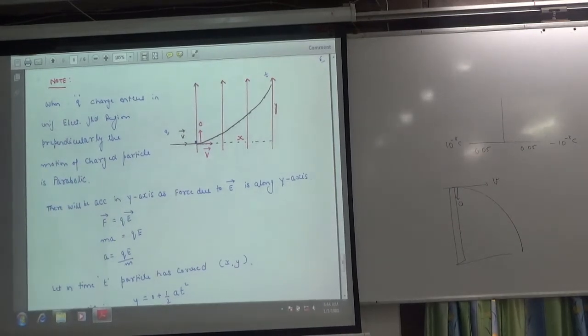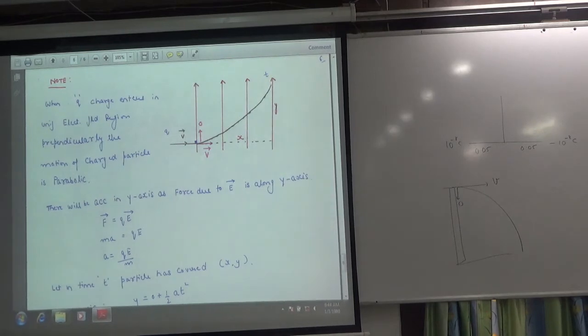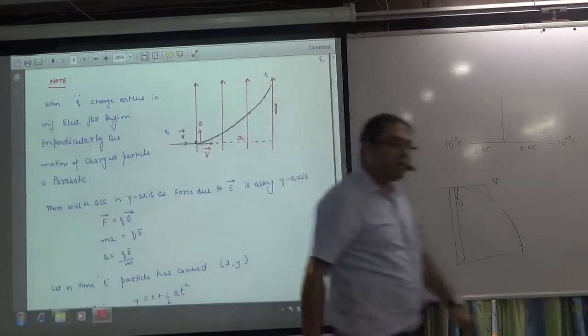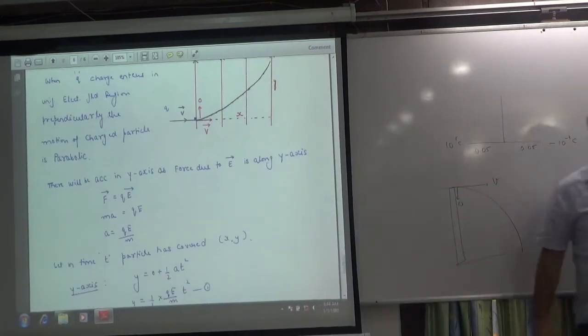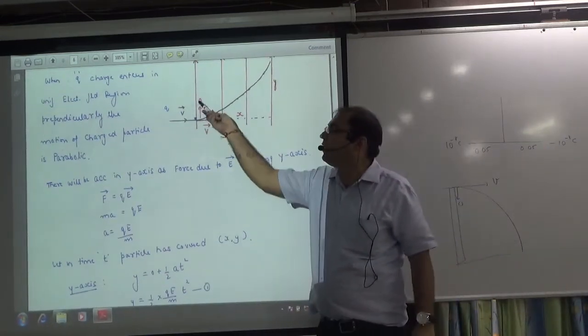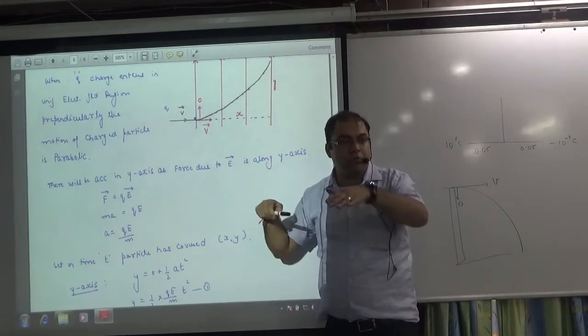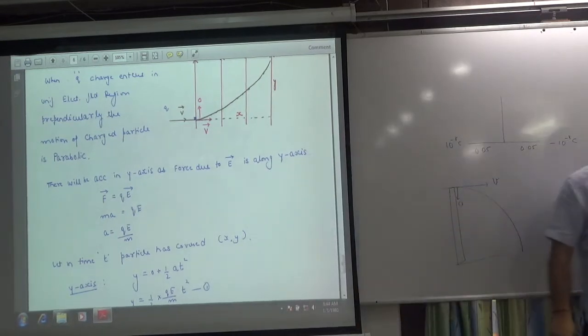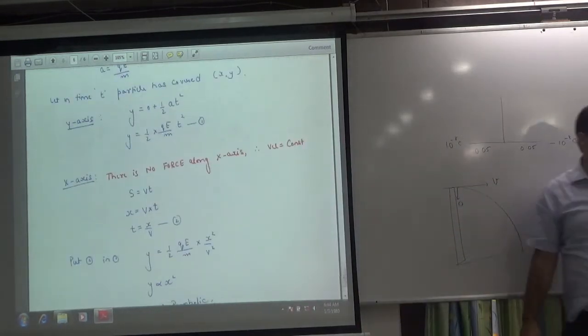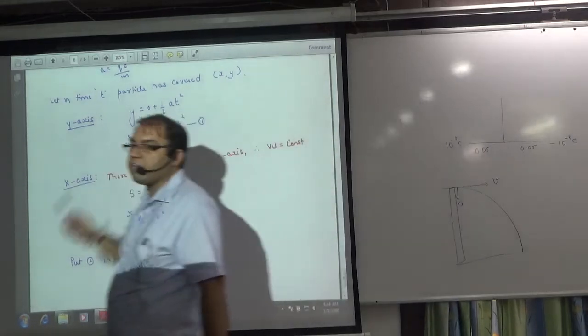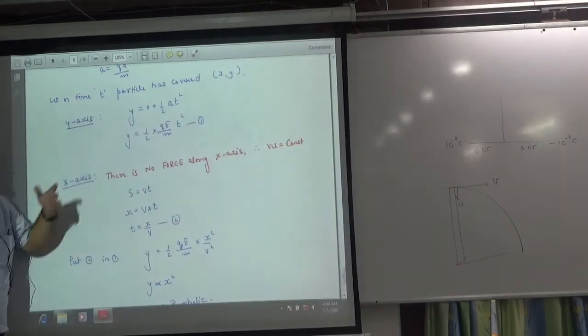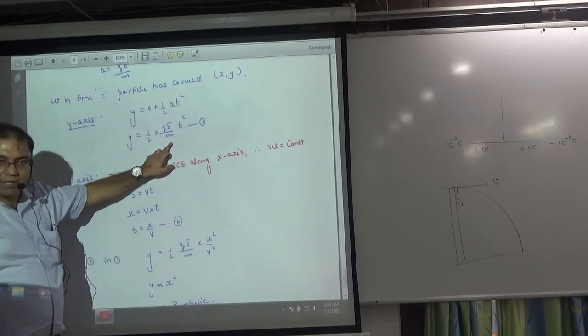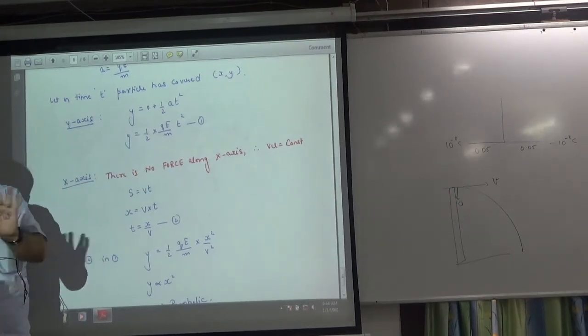Then time is going on. There is acceleration in y-axis. When that particle entered, what was the initial velocity? Zero, because it was doing move x. So the initial velocity is zero, it moved later. So y-axis along projectile, like we apply in y-axis, ut plus half at square. Y is equal to zero plus half at square. What was the acceleration in y-axis? QE by M. Equation number one. Clear?